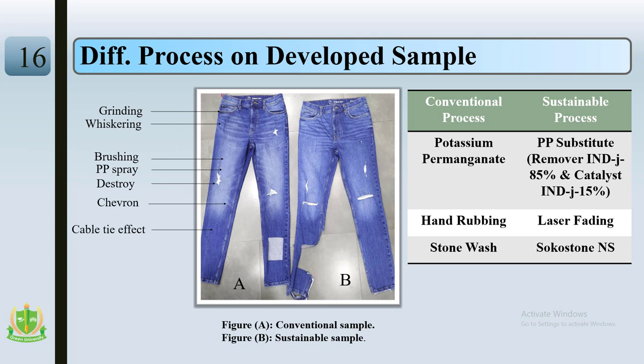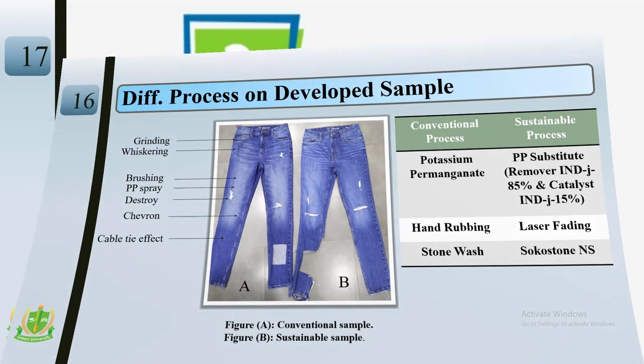Regarding the difference between conventional and sustainable processes in sample development: the sustainable process uses a PP substitute consisting of 85% remover iron and 15% catalyst iron, instead of potassium permanganate which is harmful to health. It uses laser fading instead of hand rubbing, which is costly and time-consuming. A special chemical called Socostone NS is used instead of stone wash, because stone reduces the strength of garments.